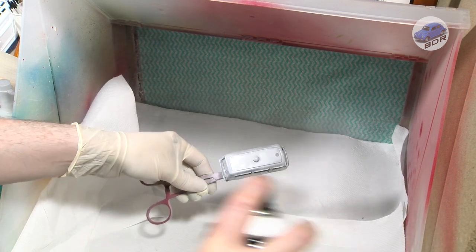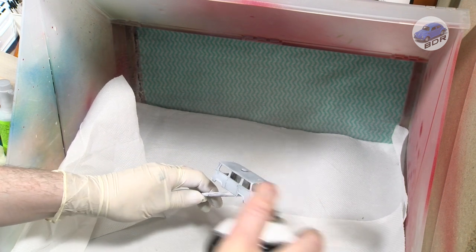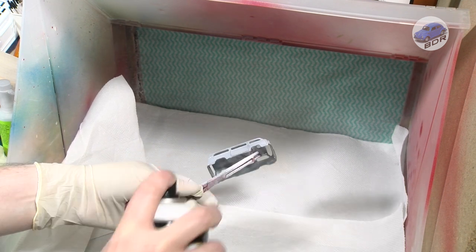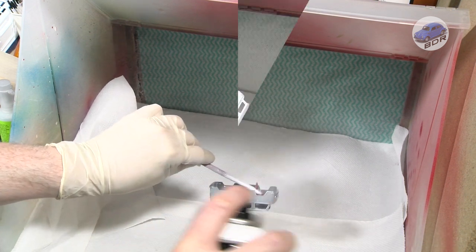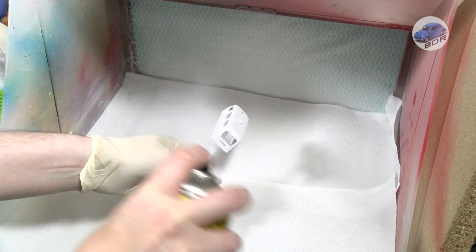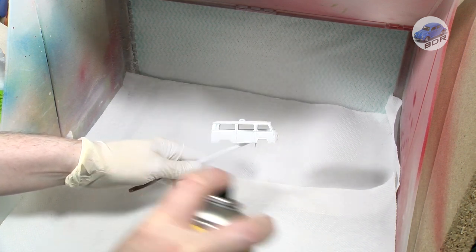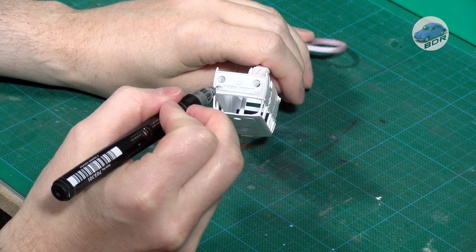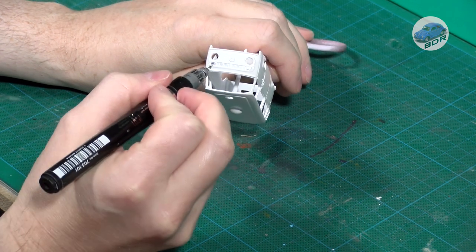My can is almost empty and is struggling. Later on I apply a second coat from a new can. After the color coat I give the indicators and the taillights a coat of Molotov chrome. This functions as a mirror base.